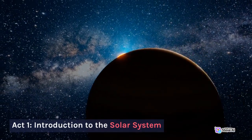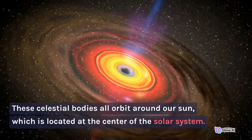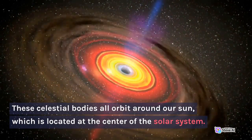Act 1 Introduction to the Solar System. These celestial bodies all orbit around our sun, which is located at the center of the solar system.